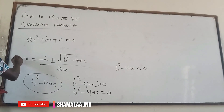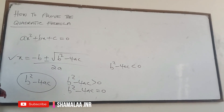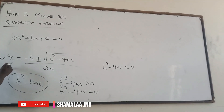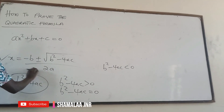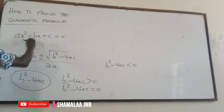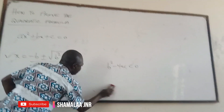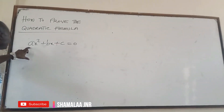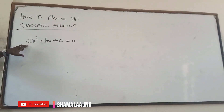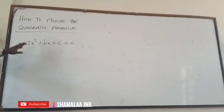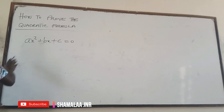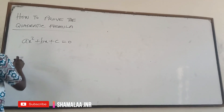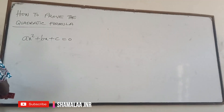So b² minus 4ac, the discriminant, determines the nature of the roots. This formula is very important in mathematics. Now we want to look at how we can derive this formula — derive it from the general quadratic equation.